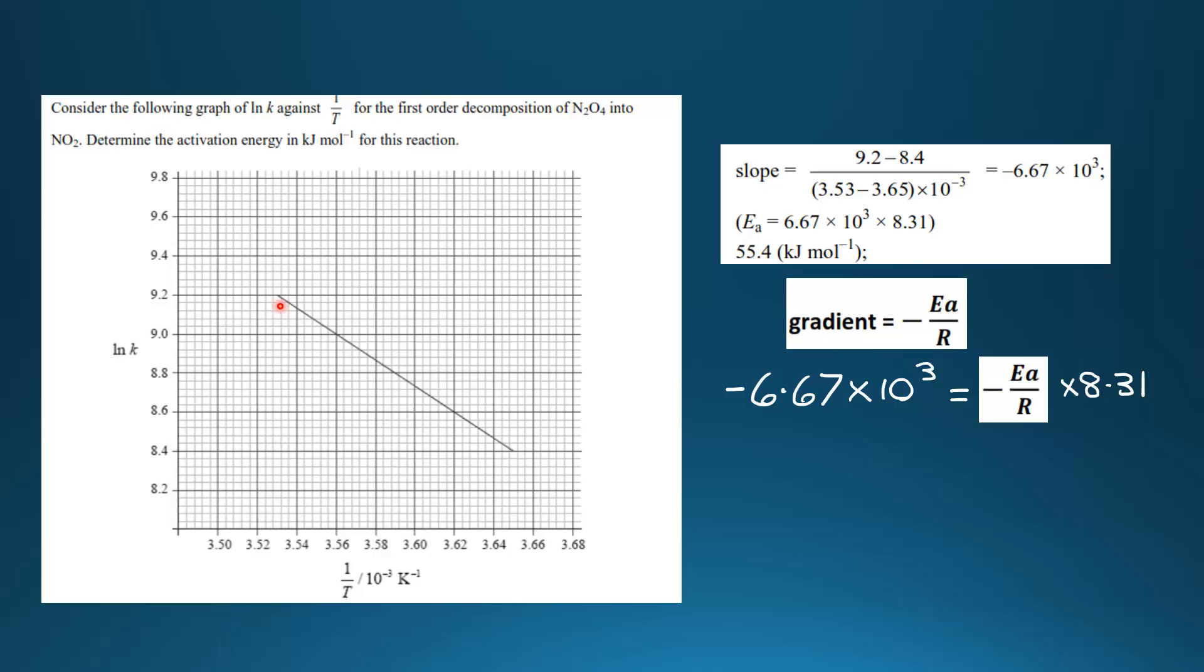The first thing we do is find the gradient of this line. The slope or gradient is equal to the change in the y-axis divided by the change in the x-axis. If you do the math, you end up with -6.67 × 10³.